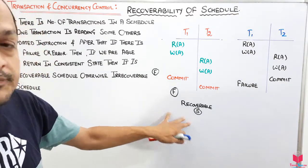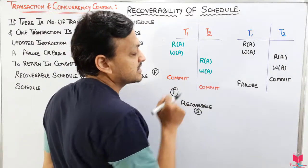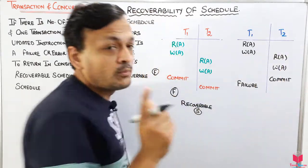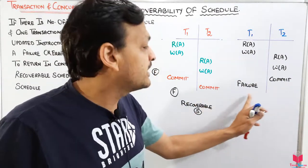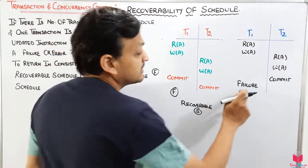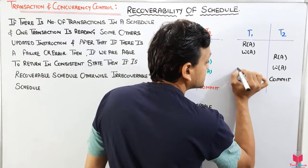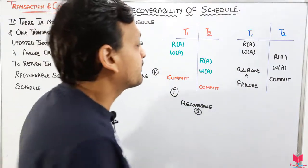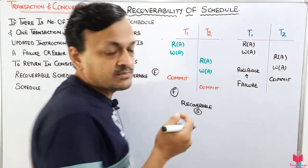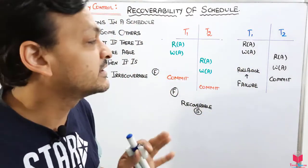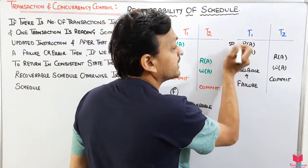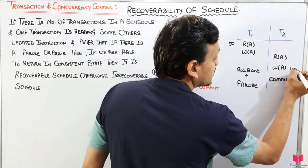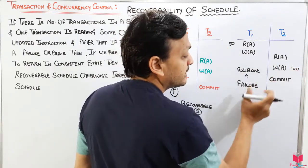Now the second example. There are two transactions again. T2 reads the updated value from T1, but T2 commits first, and then there is a failure. T1 will roll back. Suppose the original value is 50, and T1's write updated it to 100. T1 rolls back and returns the value to 50, but T2 already committed having read the value as 100. So there is an inconsistency — the value is 50 in one place and 100 in the other.